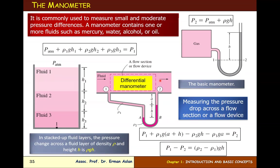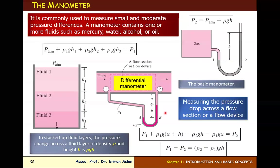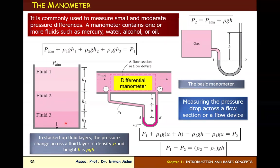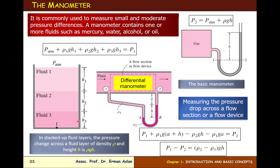In this manometer setup, we have mercury, P_atm, fluid 1, fluid 2, and fluid 3, each with heights H1, H2, and H3 respectively. To calculate the pressure at a given point: P = P_atm + ρ₁gH1 + ρ₂gH2 + ρ₃gH3.